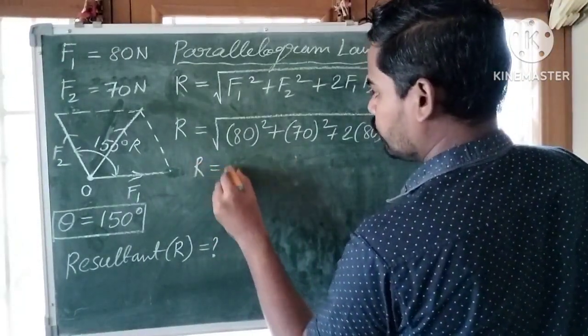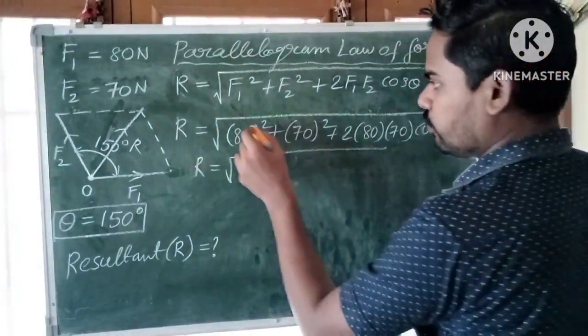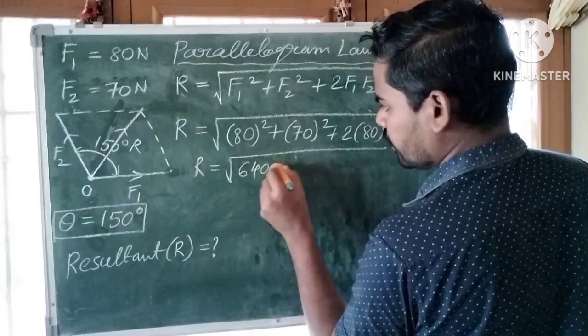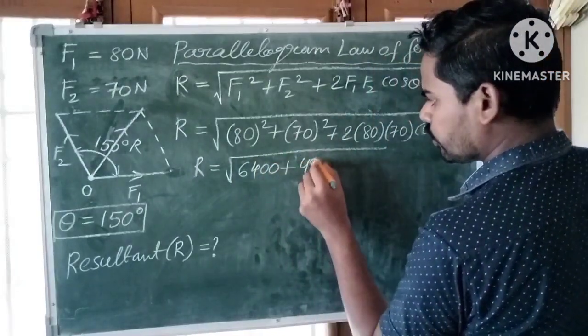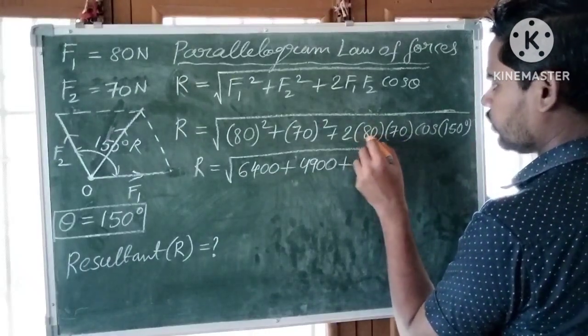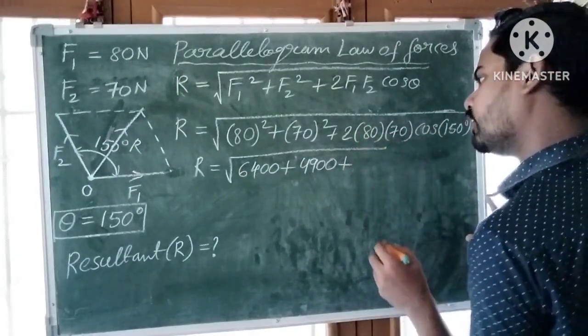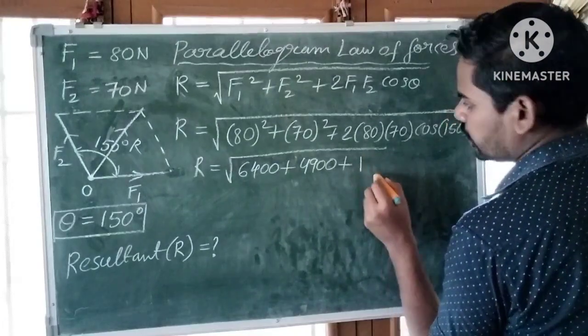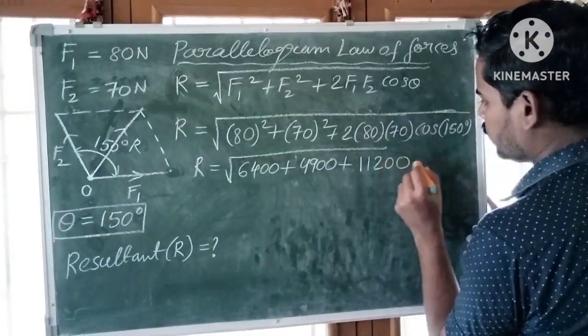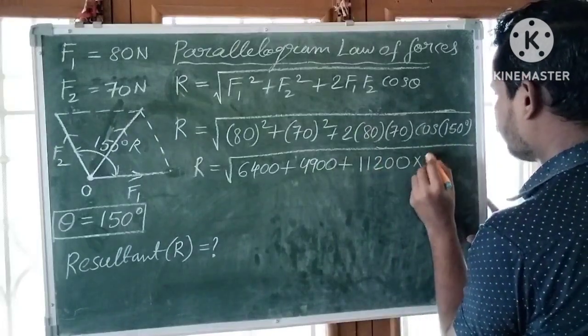R is equal to, let's find the values. 80 square is 6,400, 70 whole square is 4,900 plus. 8 times 7 is 56, so 2 times 56 is 11,200 into cos 150.